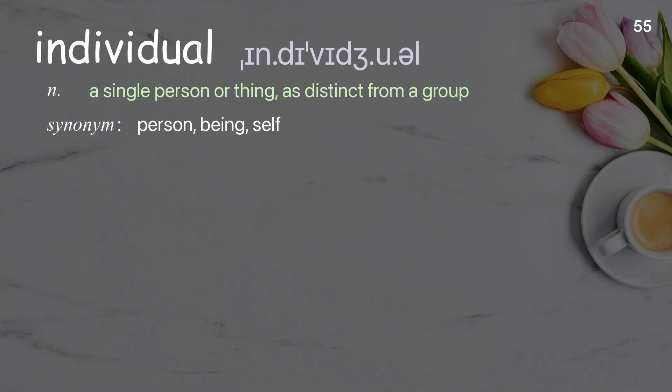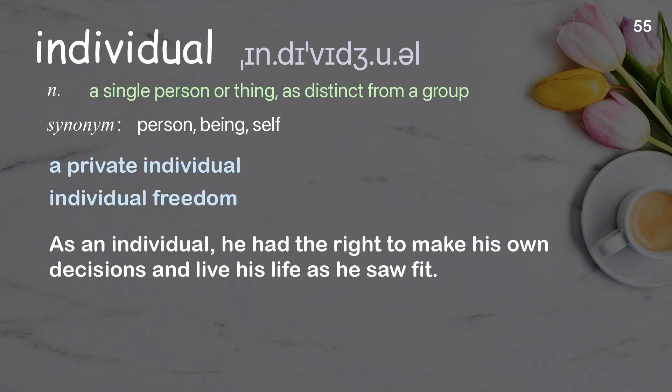Individual: a single person or thing as distinct from a group. Examples: a private individual, individual freedom. As an individual he had the right to make his own decisions and live his life as he saw fit.